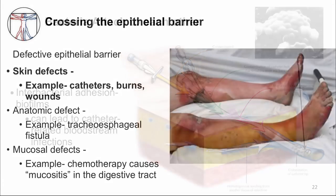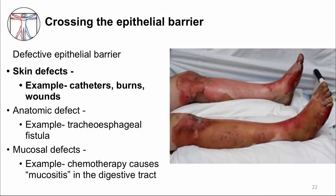Catheters are also a good example of how microbes can penetrate the epithelial barrier to establish invasive infection. Breakdown of the epithelial barrier is a common theme in the establishment of infection. And in addition to catheters, other skin defects, such as burns and wounds, can predispose a patient to infection.